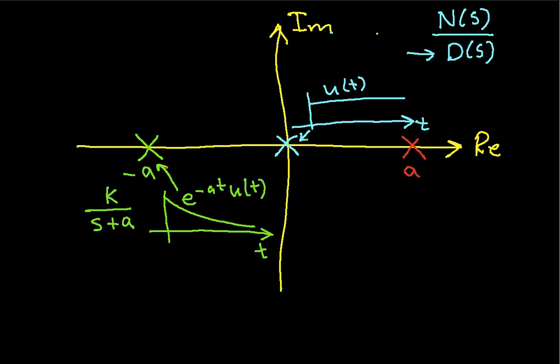So, what would happen if we have something out here? Say, a pole at plus a. Well, we again know that this corresponds to k over s minus a. So, that's the sort of thing that would show up in the partial fraction expansion. And, k over s minus a corresponds to an e to the a t u of t.